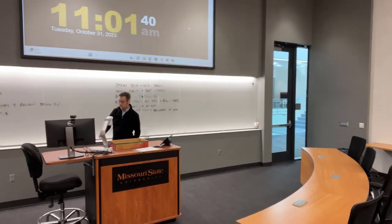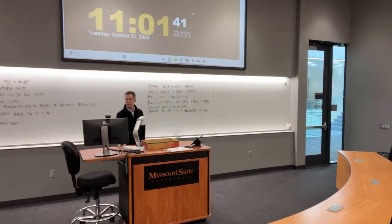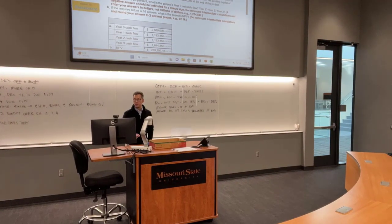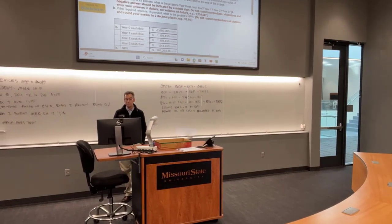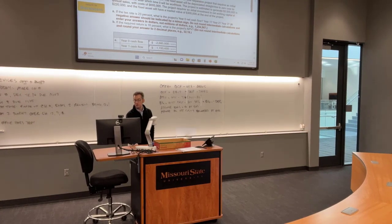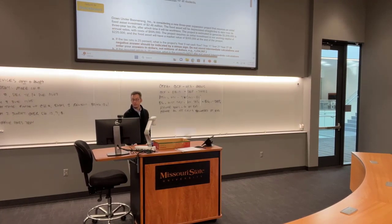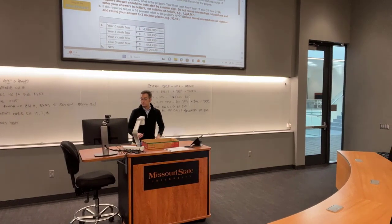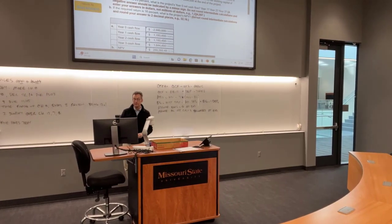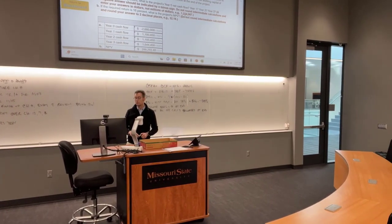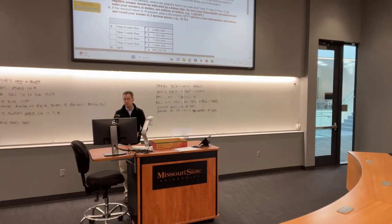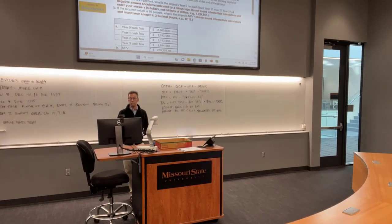Any questions before we get started? I picked an example that actually had some difficulty to it this time. We've got Down Under Boomerang considering a three-year expansion project — by the way, this is number two on your practice for chapter eight — requiring an initial fixed asset investment of 2.46 million. The fixed asset will be depreciated straight line to zero over its three-year tax life.